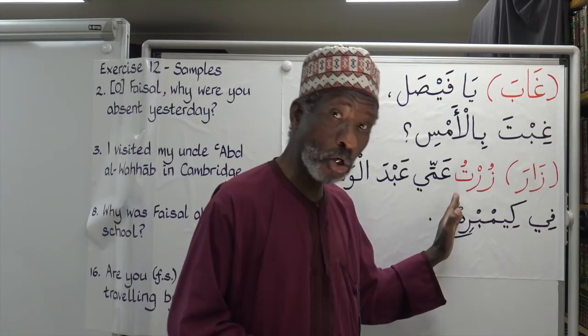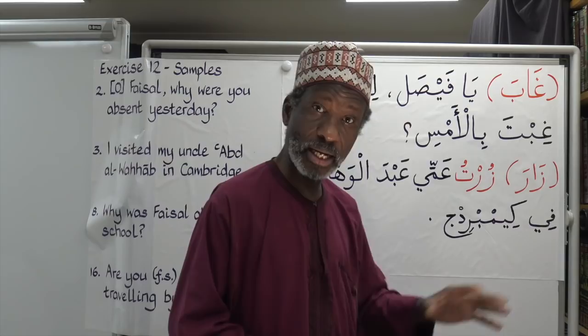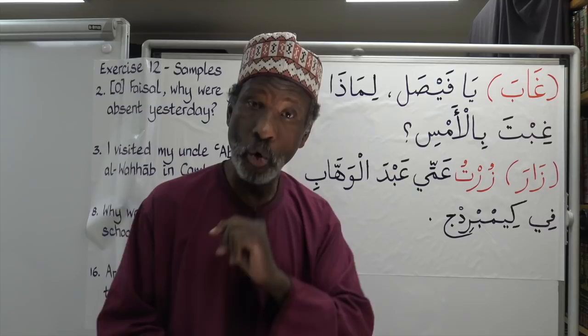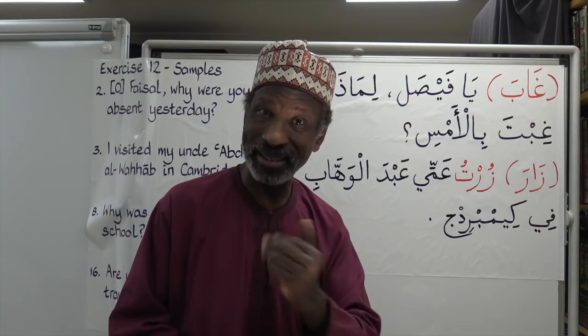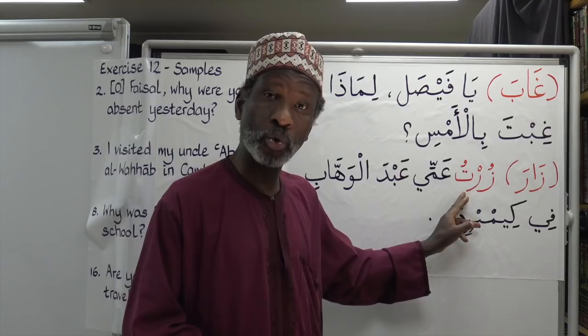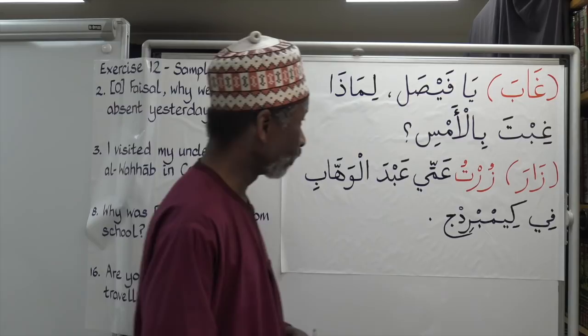Now we need to conjugate it to say 'I visited.' You know that the second root letter is going to be removed because the third root letter needs to carry sukun, and the letter which has been removed is essentially also sukun because it's a lengthening letter. So Zara, Yazuru becomes Zurtu — 'I visited.'